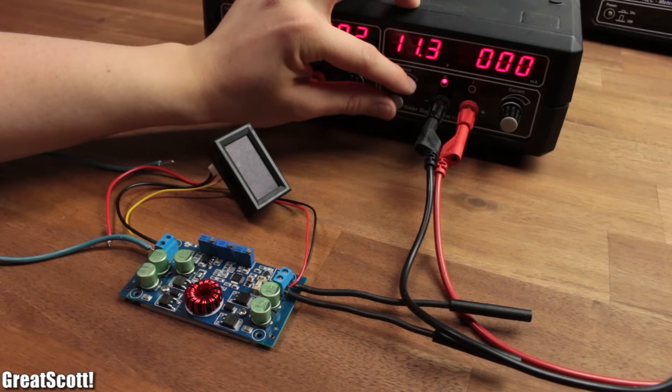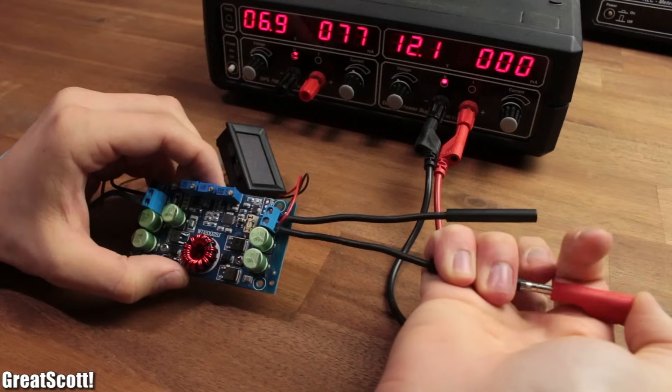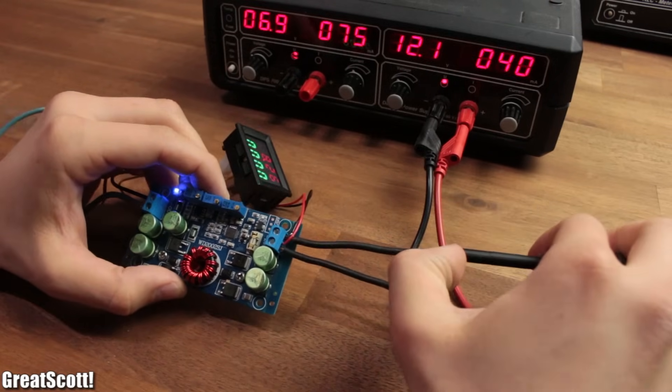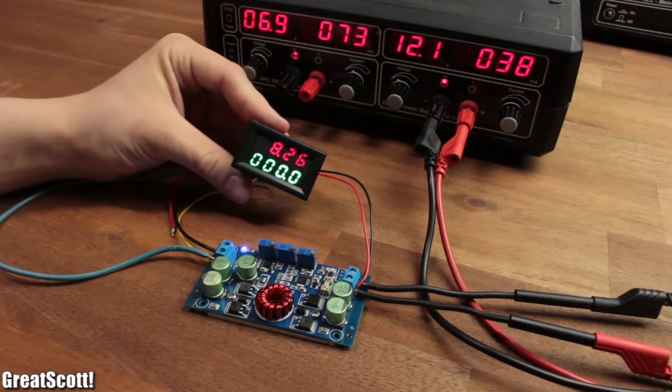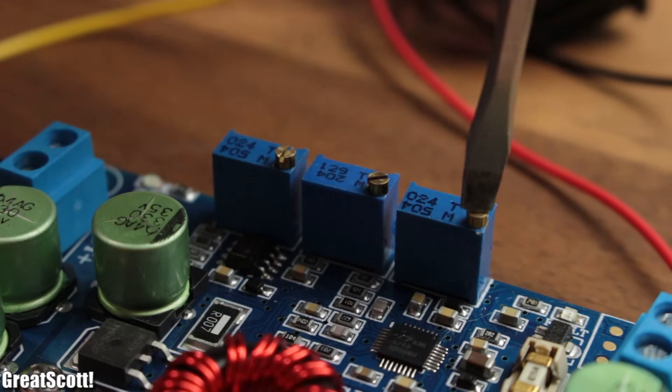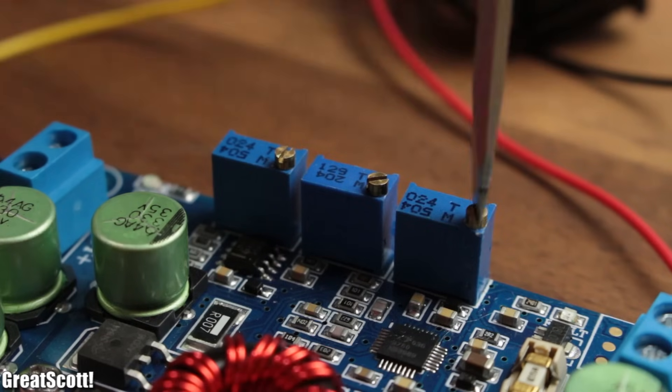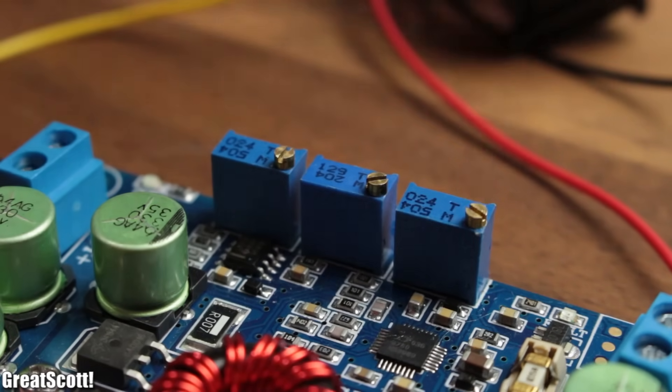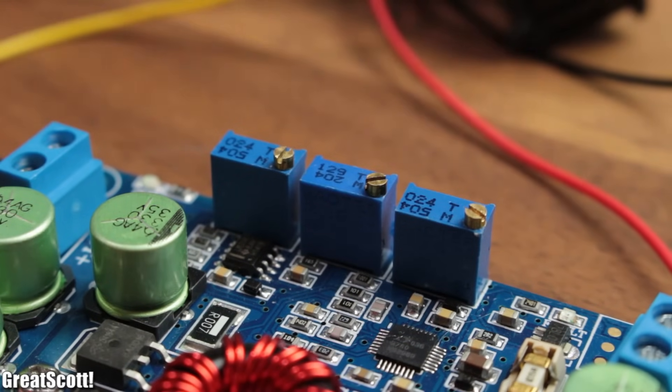Now I can turn on my bench power supply, set the voltage to 12 volts and connect the wires. Everything powers up and we can play with the three potentiometers. The far right one controls the under-voltage protection and is mostly used for solar charging. We do not care about that, so don't touch it.